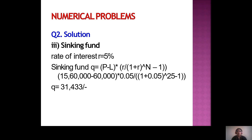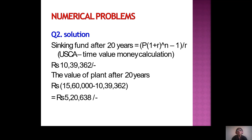The sinking fund after 20 years, using the future value formula, gives 10,39,362. The value of the plant after 20 years = initial investment minus sinking fund after 20 years = 15,60,000 − 10,39,362 = rupees 5,20,638.